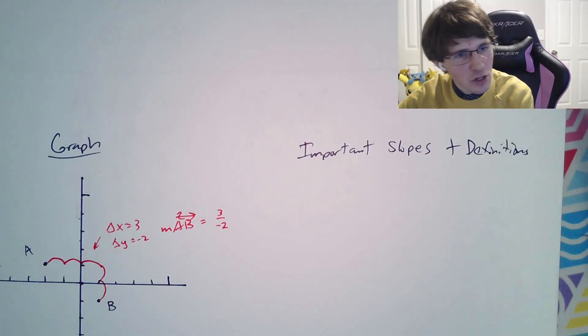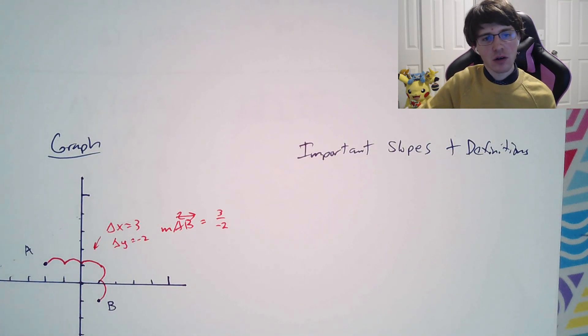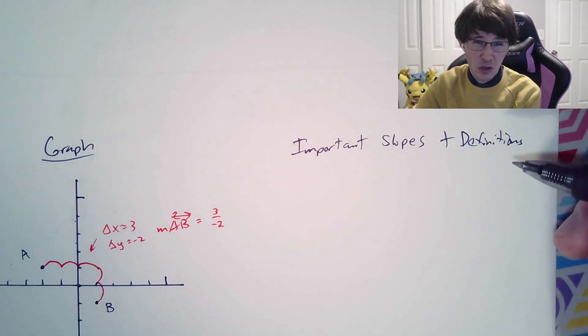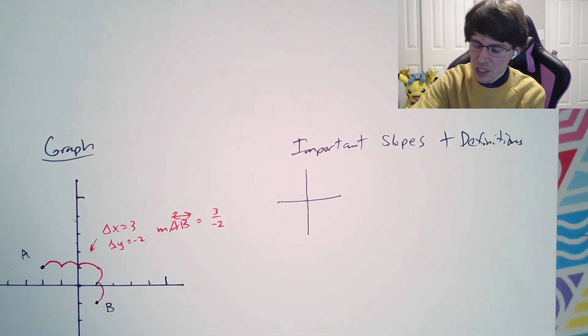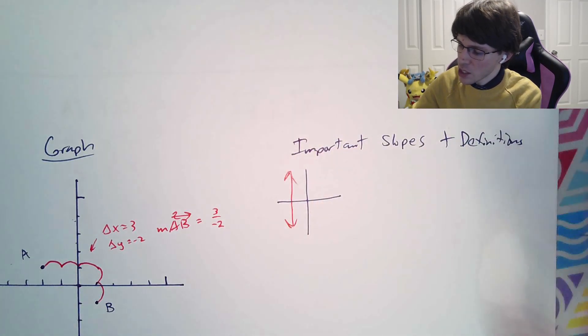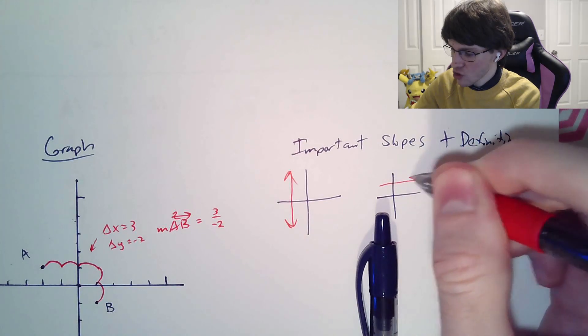Now, I did say there's some important slopes and definitions. The important slopes and definitions, there are a couple of them that you end up just memorizing. The ones that you end up memorizing for the two types of slopes are going to be the vertical slopes.